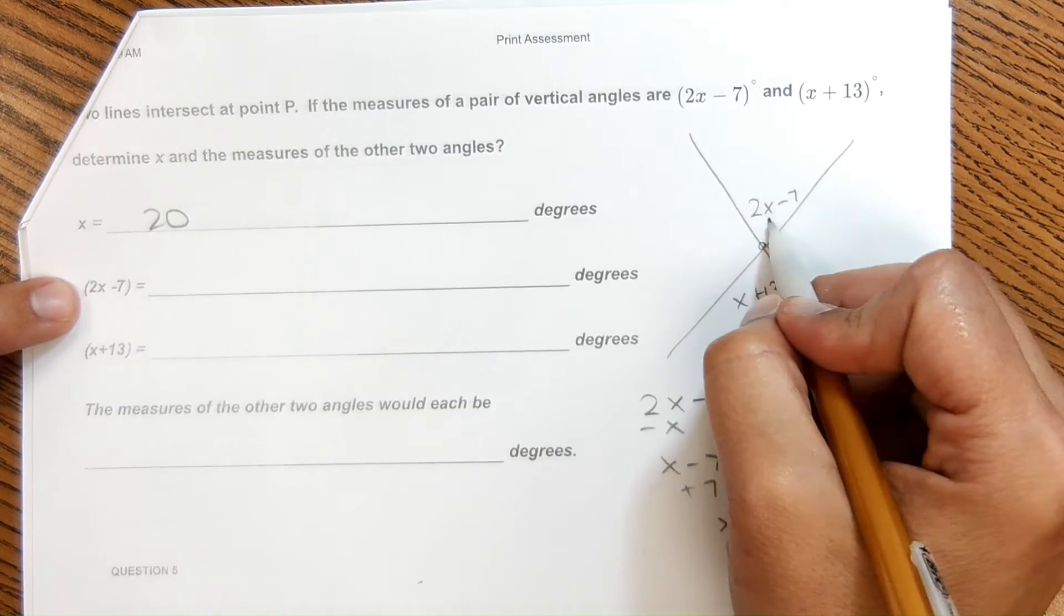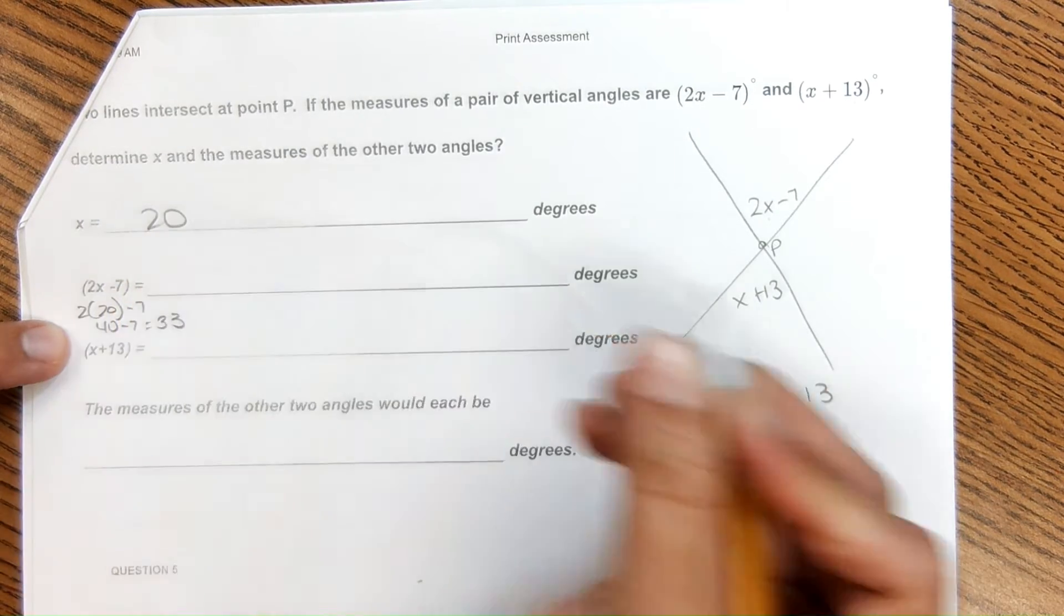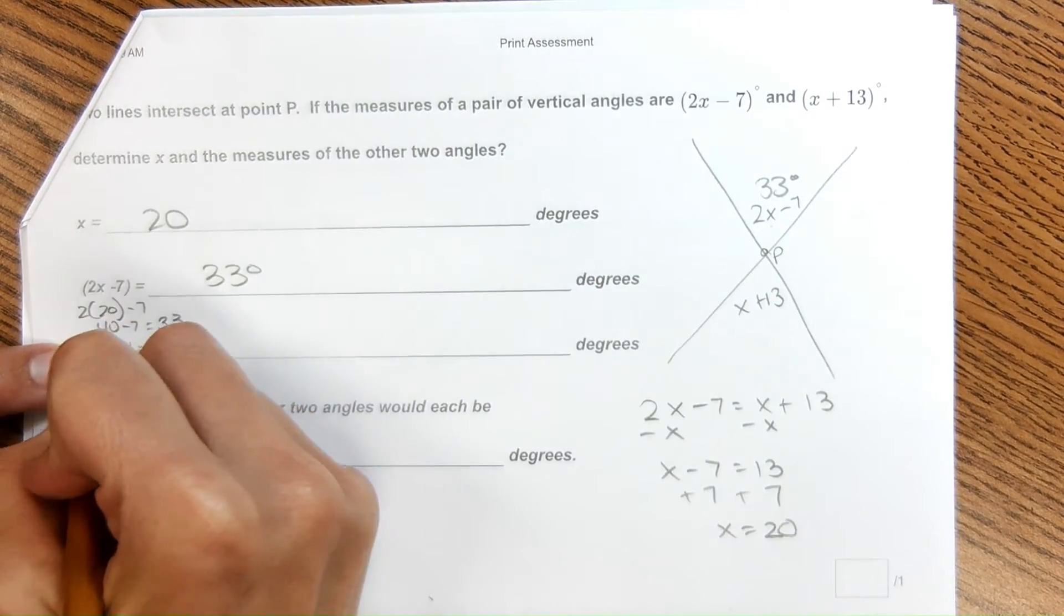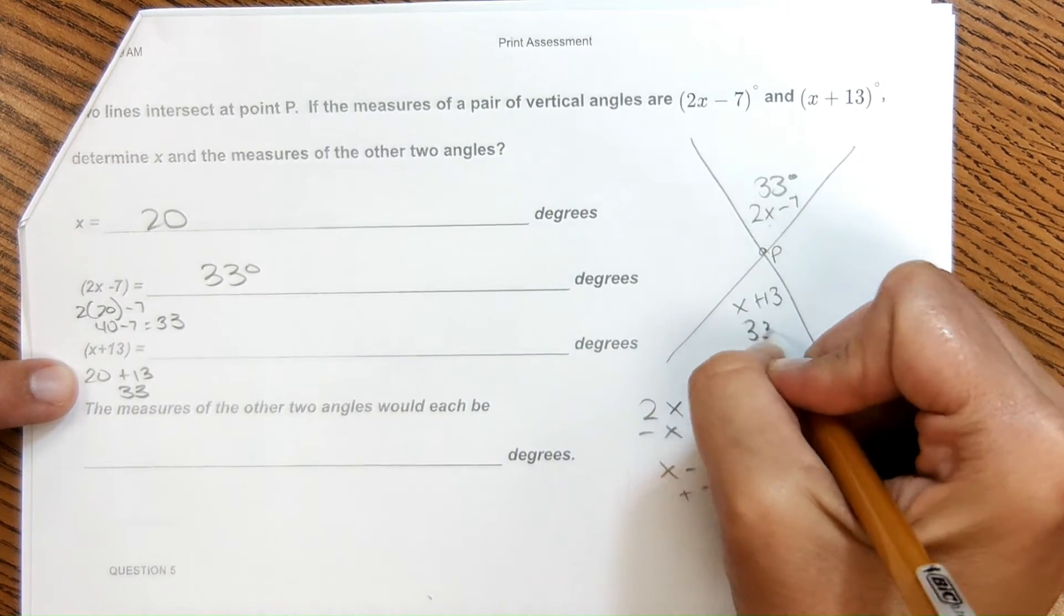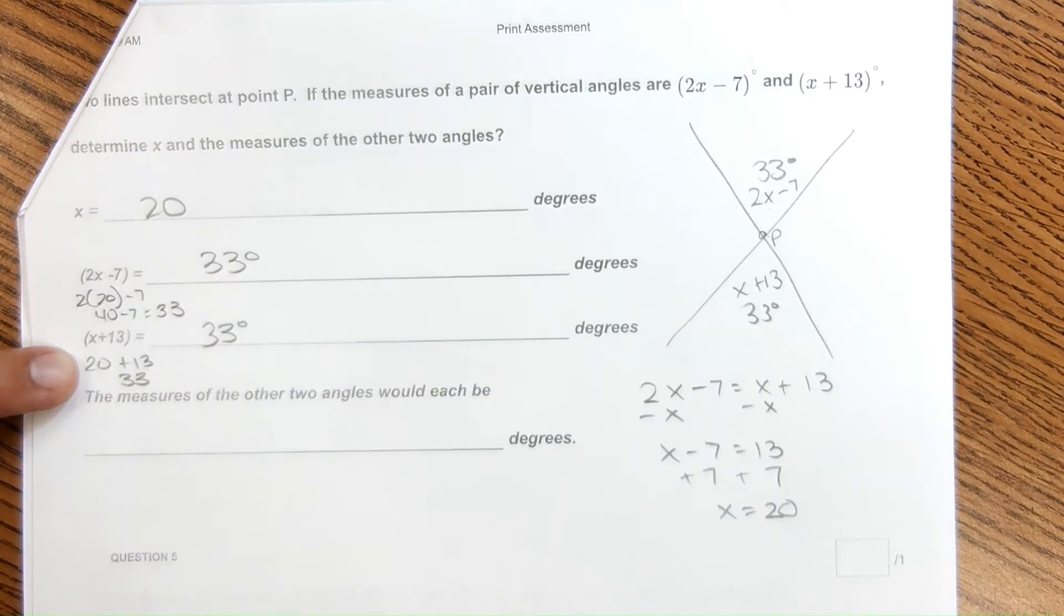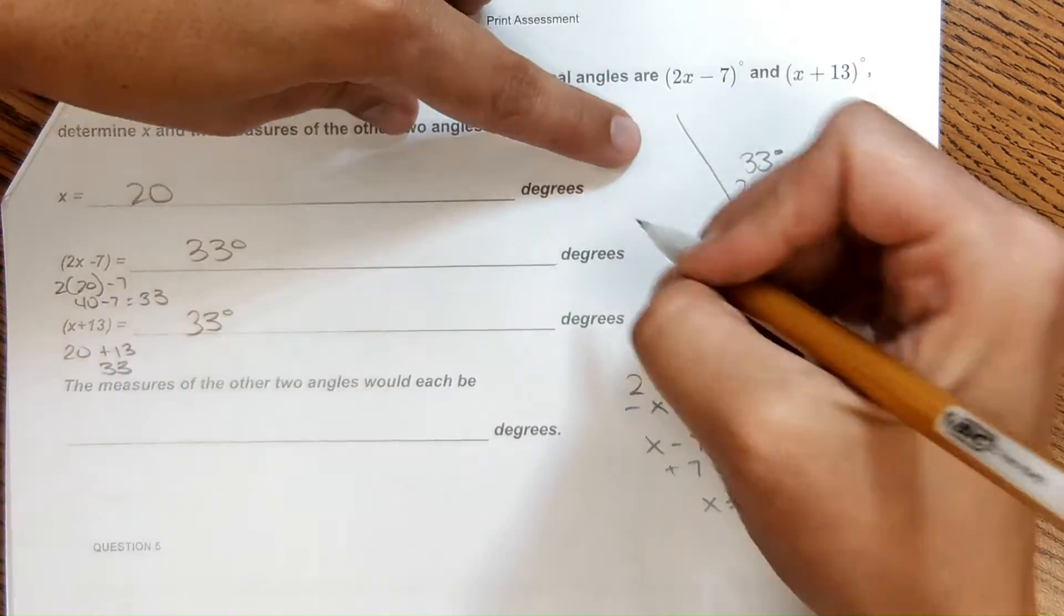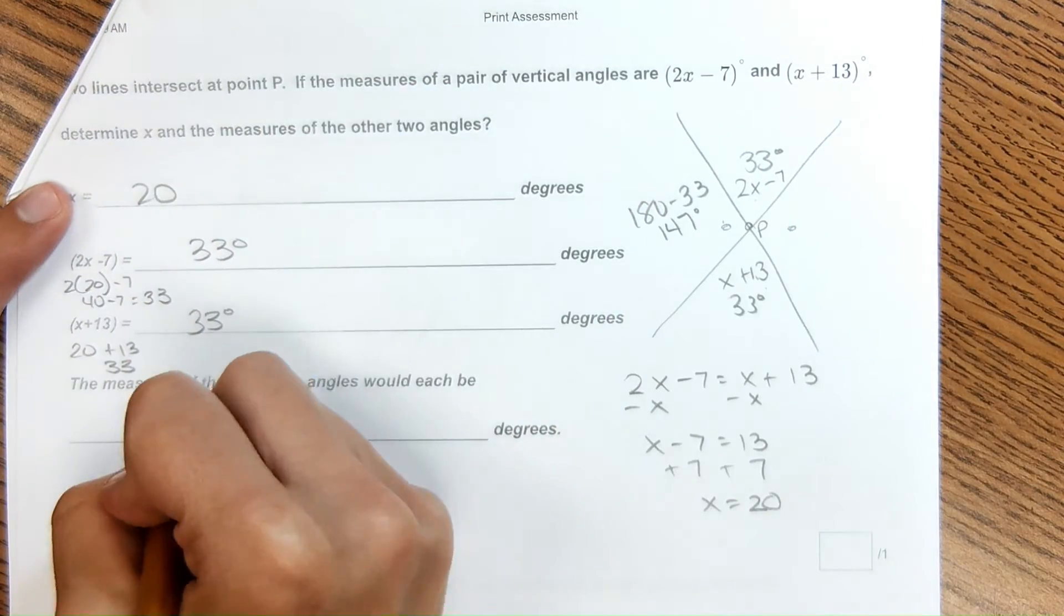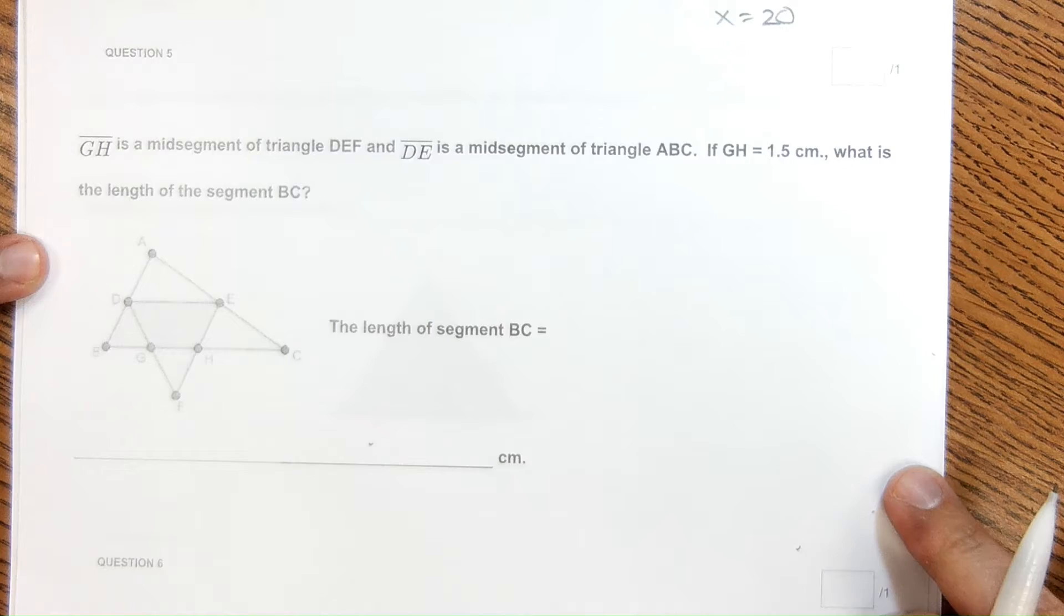Then for this, it wants to know what this angle measure is. If you plug in 2X, what happens? We have 40 minus 7, so that would be 33 degrees. So this is 33 degrees. This angle measure, 33 degrees. This one as well, you plug in the value X, you get 33, which makes sense because vertical angles should be the same value. Then it has for the measure of the other two angles. Well, this angle and this angle would be supplementary to that. So 180 minus 33 comes out to 147 degrees. And that is what they're looking for right here, 147.